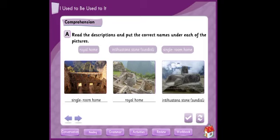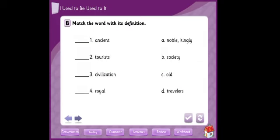Exercise B: Match the word with its definition. We need to know what definition means - definition means تعريف. So we will connect each word with its appropriate definition. The first one is ancient, two is tourist, three is civilization, four is royal. The second column: A is noble or kingly, B is society, C is old, D is travelers.